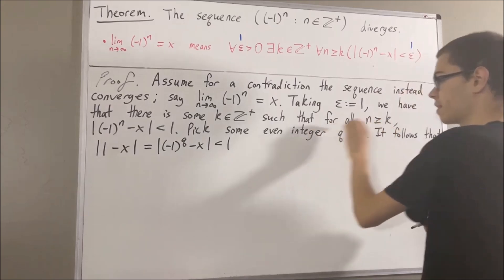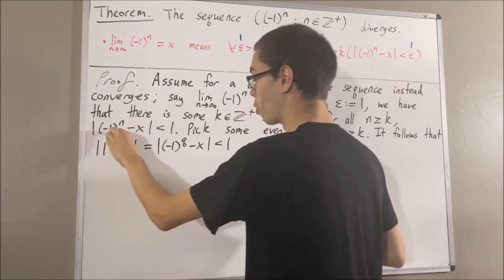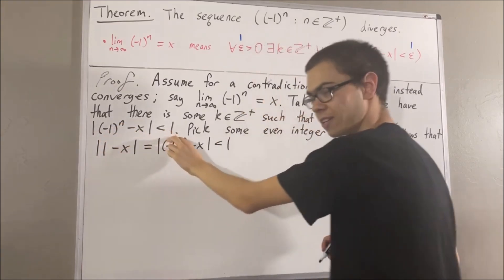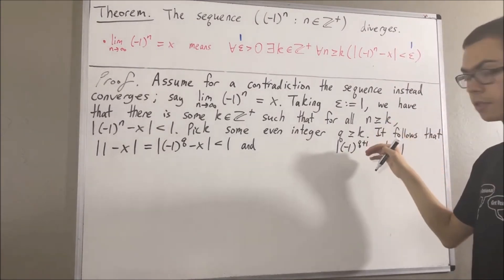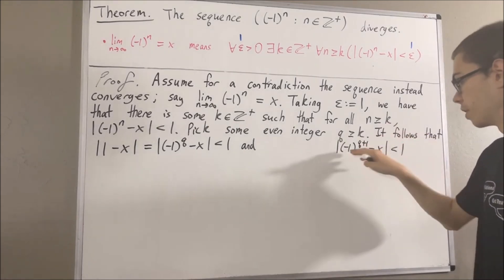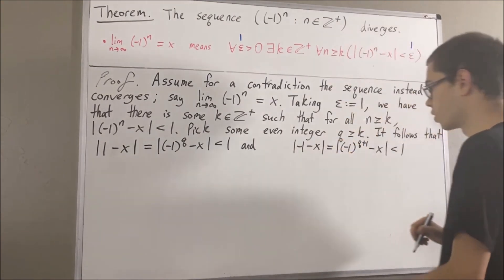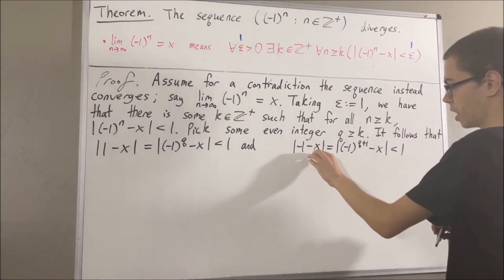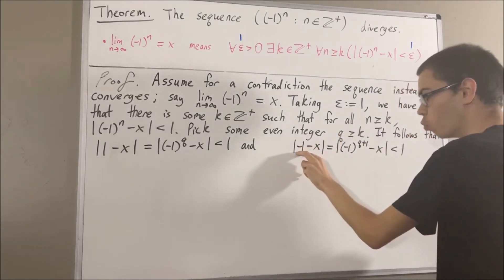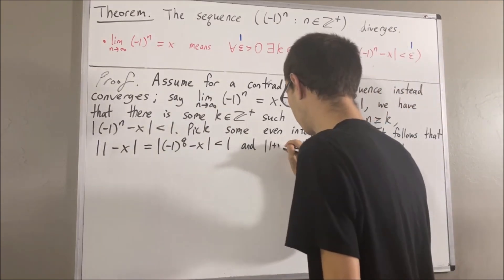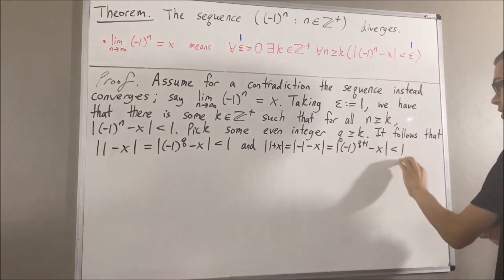Also, we can apply this statement to q plus 1. So, we have that the absolute value of negative 1 to the power of q plus 1 minus x is less than 1. Well, since q is even, q plus 1 is odd. So, negative 1 to the power of q plus 1 must equal negative 1. So we have absolute value of negative 1 minus x, which I'll rewrite as absolute value of 1 plus x — these two are equal to each other. So, the absolute value of 1 plus x is less than 1.